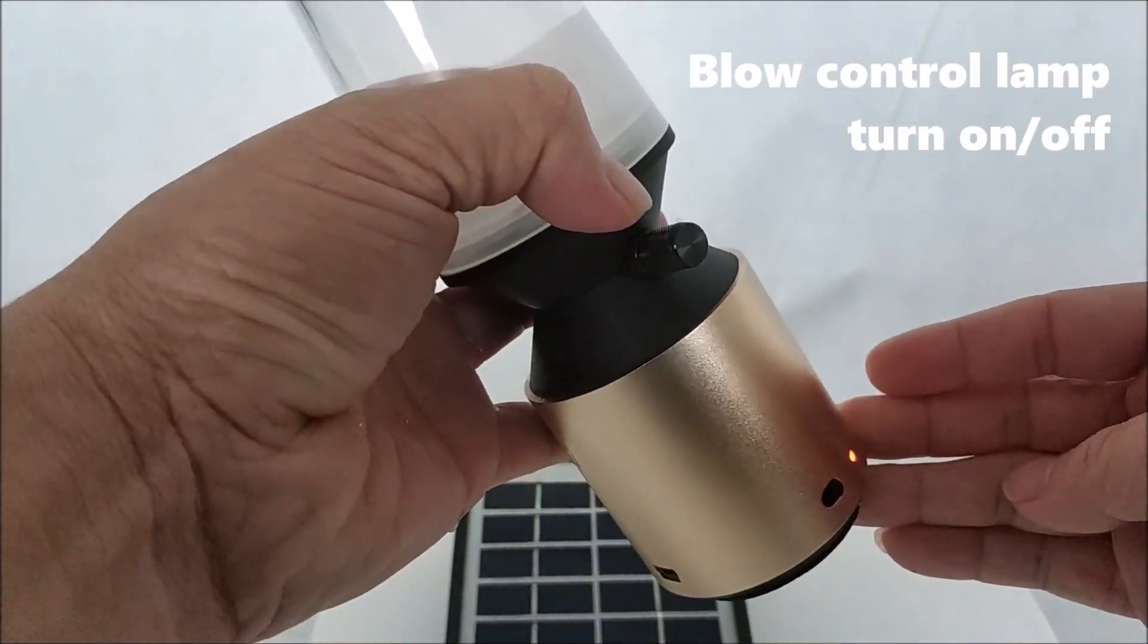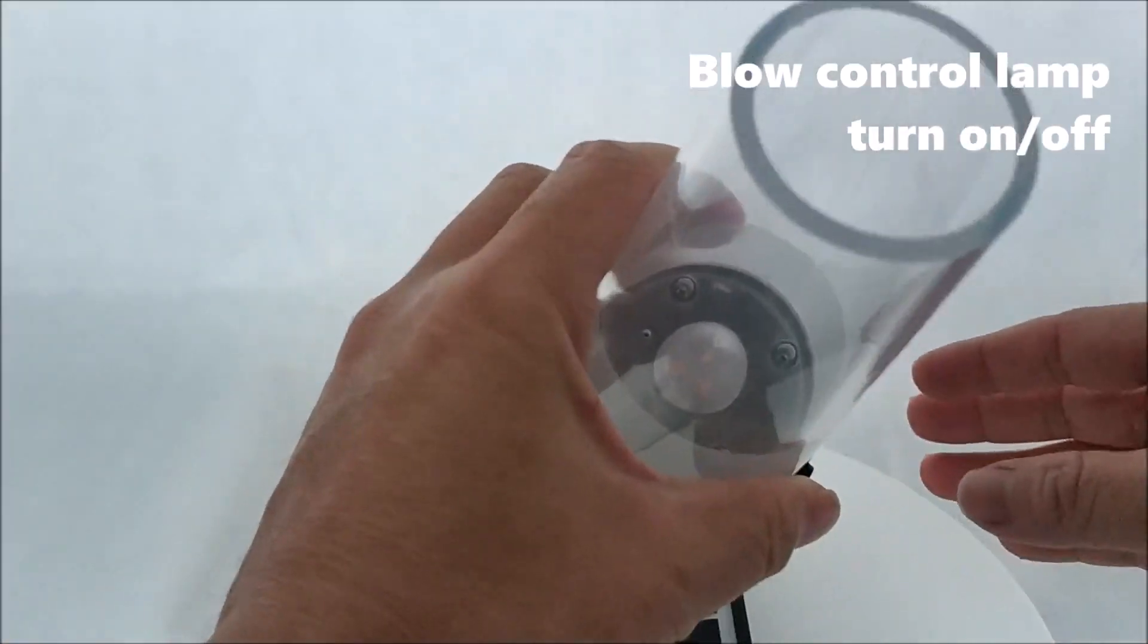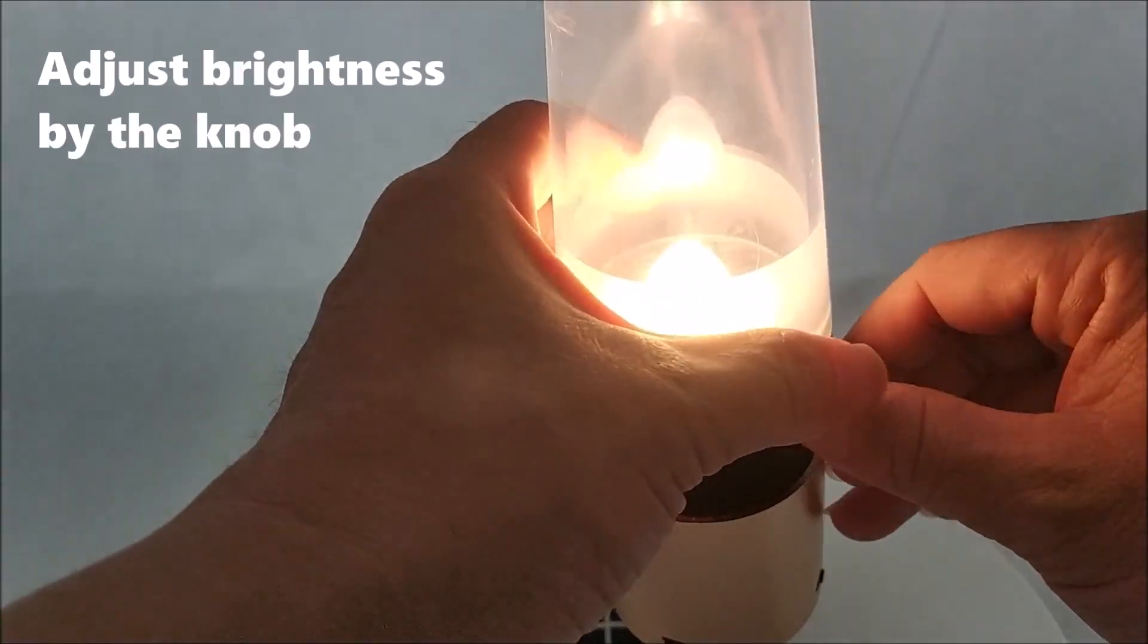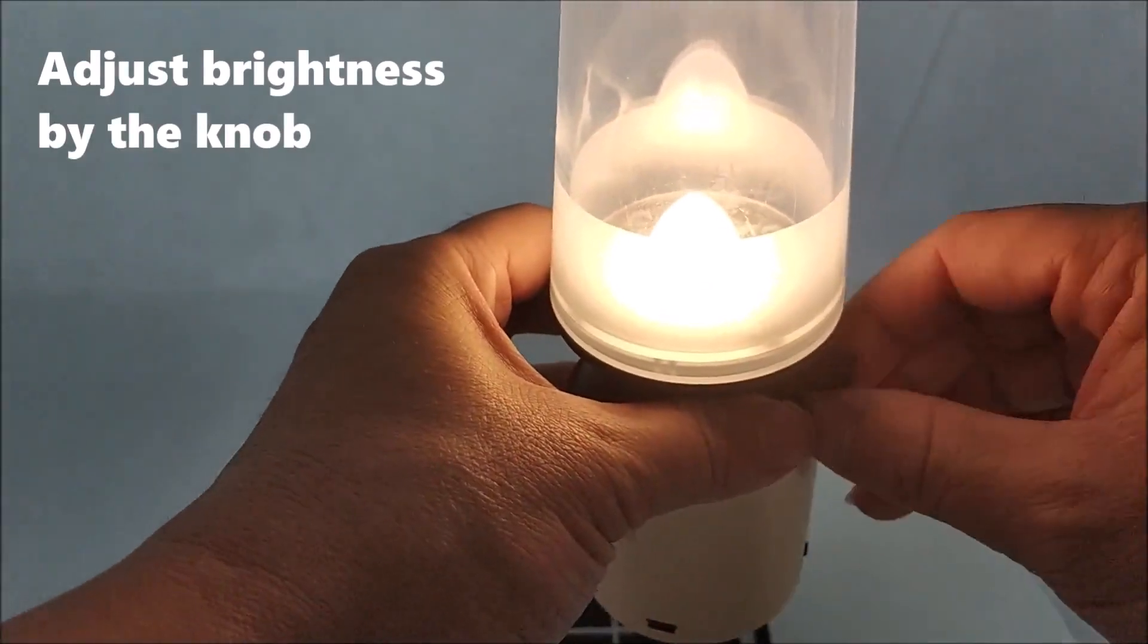Blow control lamp to turn on and off. Adjust the brightness by the knob.